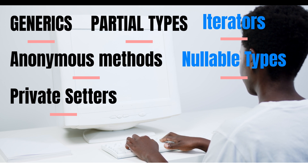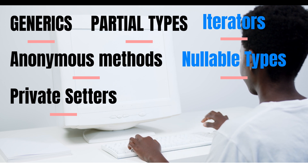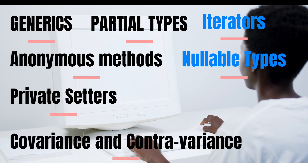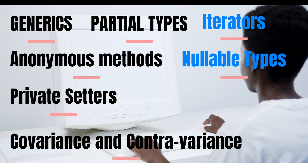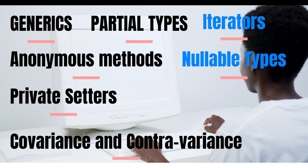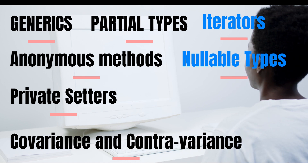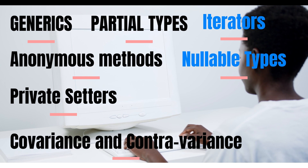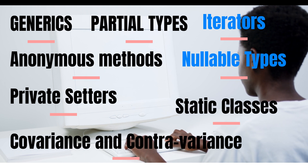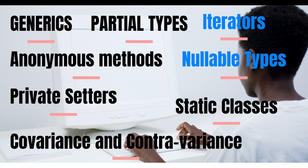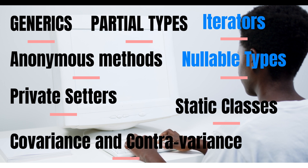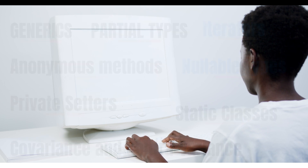Covariance and contravariance were also introduced in 2.0, enabling implicit reference conversion for arrays, delegate types, and generic type arguments — covariance preserves assignment compatibility while contravariance reverses it. Additionally, static classes were added: a static class is sealed, abstract, and no instance members can be overridden or declared.